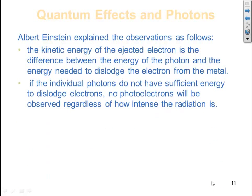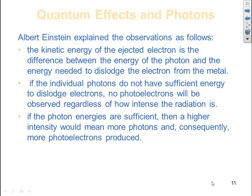If the individual photons do not have sufficient energy to dislodge electrons, no photoelectrons will be observed, regardless of how intense the radiation is. If the photon energies are sufficient, then a higher intensity would mean more photons and consequently more photoelectrons produced.